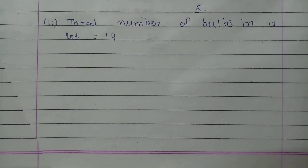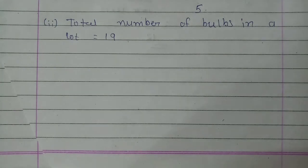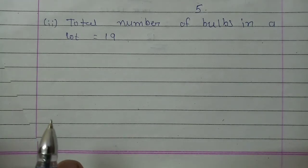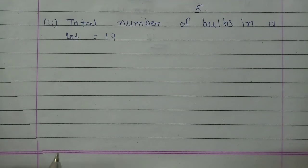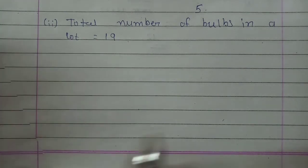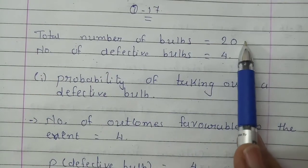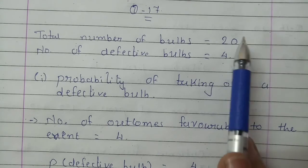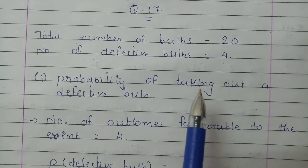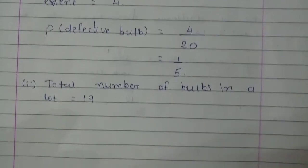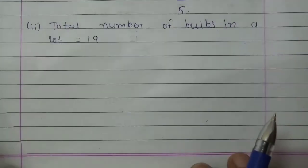Now we have to find the probability that if one bulb is drawn from these 19, it is non-defective. Originally there were 20 bulbs with 4 defective, so non-defective bulbs were 20 minus 4, which is 16. Since one non-defective bulb was removed and not replaced, we now have 15 non-defective bulbs remaining.